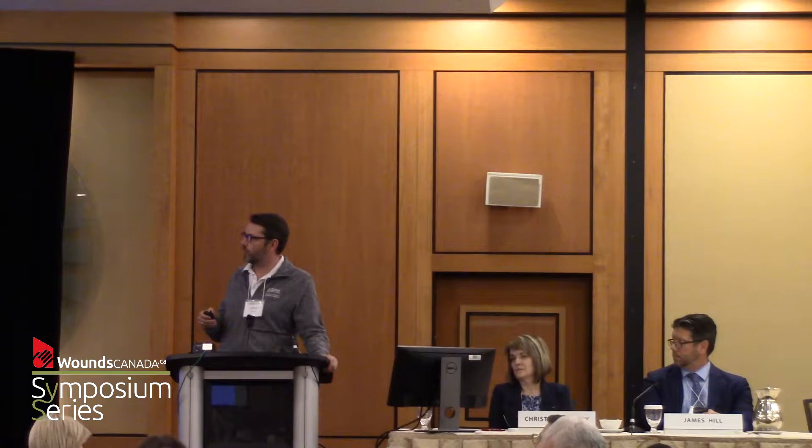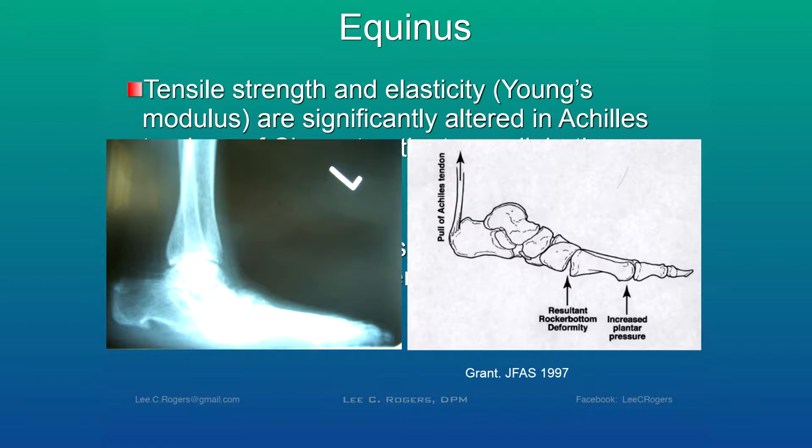Inflammation is a major component of Charcot foot. Also involved is the effect of the Achilles tendon — diabetes has direct effects on both muscles and tendons. The Achilles tendon has been studied in patients with Charcot and diabetic neuropathic controls and found by electron microscopy to have unique characteristics resulting in reduced elasticity. In this X-ray, the heel isn't even touching the ground; there is a lot of pressure on the forefoot and midfoot, leading to dislocation at the midfoot, which is the most common site.